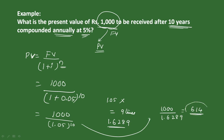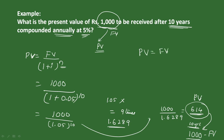The present value is ₹614. This means ₹614 invested now at 5% will become ₹1,000 after 10 years. The future value is 1,000 and 614 is the present value. This is the present value interest factor at the rate of 5% after 10 years.